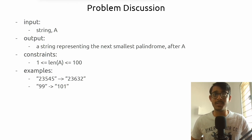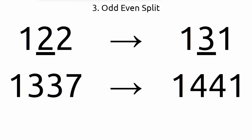This question has a lot of edge cases, so it's a good idea to split test cases out. I'm going to split them into odd and even cases because of how palindromes work. For odd length, 122 becomes 131 — mirrored across the center point where 3 is the center. For even length, 1337 becomes 1441, perfectly mirrored around the center point. We'll pick odd cases first and build our solution from there.